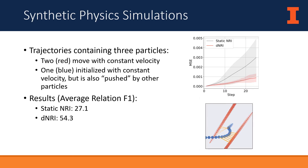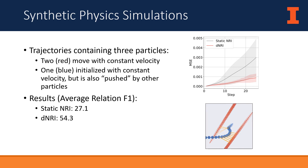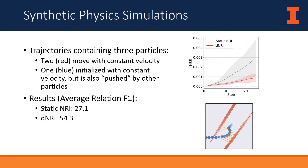We first ran experiments on a synthetic physics simulation dataset designed to analyze DNRI's ability to recover ground truth dynamic relations. Each trajectory consists of three particles: two in red that move with constant velocity, and one in blue initialized with constant velocity but additionally pushed by the other particles whenever their distance falls below a threshold. Static NRI, which cannot properly model dynamic relations, achieves an average relation prediction F1 of 27.1, while DNRI achieves an average relation F1 of 54.3.